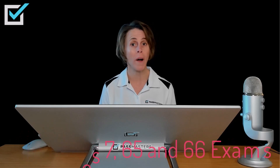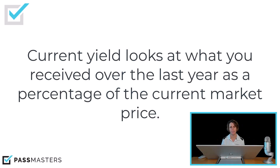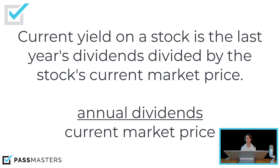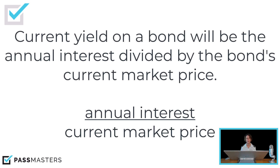Let's look at what exactly is current yield. Current yield looks at what you have received over the last year divided by the current market price. You may be asked to calculate current yield on a stock or on a bond. On a stock, the formula for current yield will be annual dividends — the sum of the previous four quarters' dividends — divided by current market price. Current yield on a bond will be the annual interest divided by the bond's current market price.